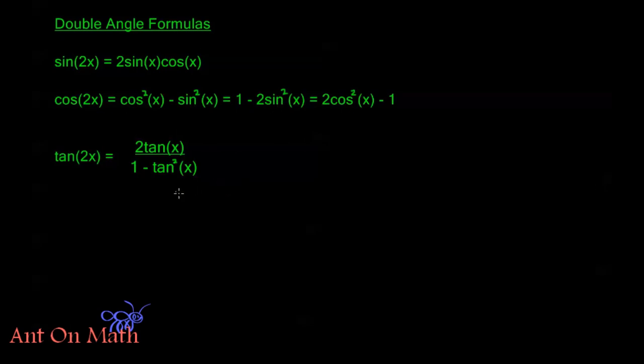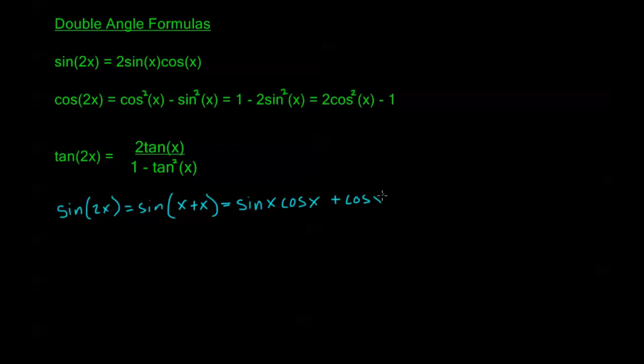These double angle formulas are just a very special case of our addition formulas from the last section. If we look at sine of 2x, we could write this as sine of x plus x. The addition formula for sine gives us sine x cosine x plus cosine x sine x, which is just 2 sine x cosine x. Both terms from the addition formula are exactly the same.